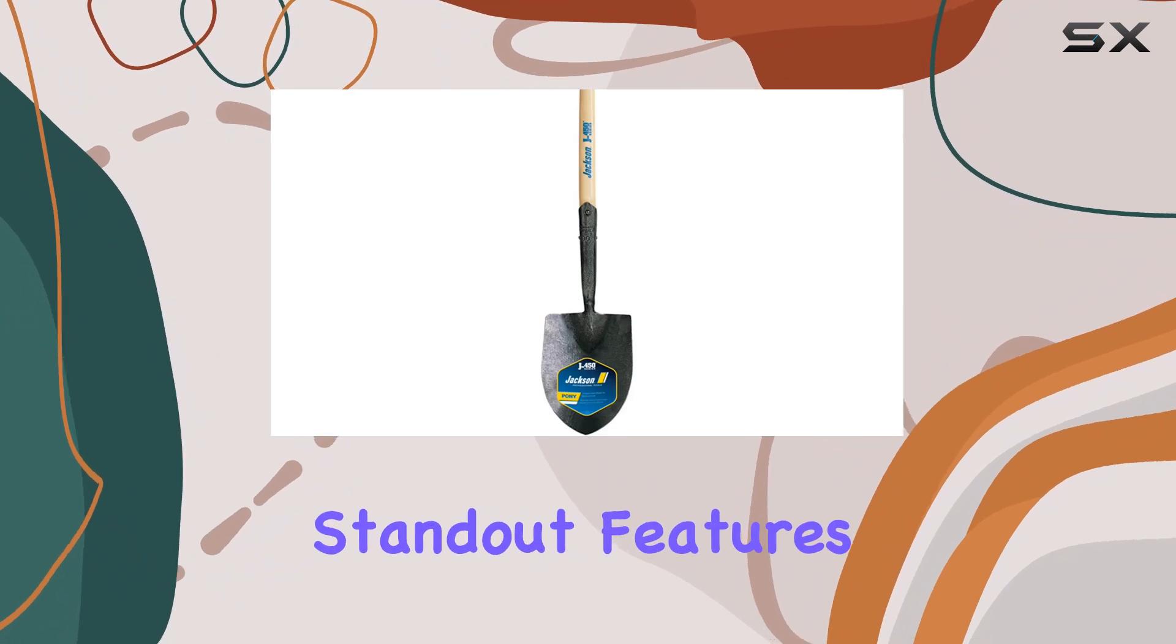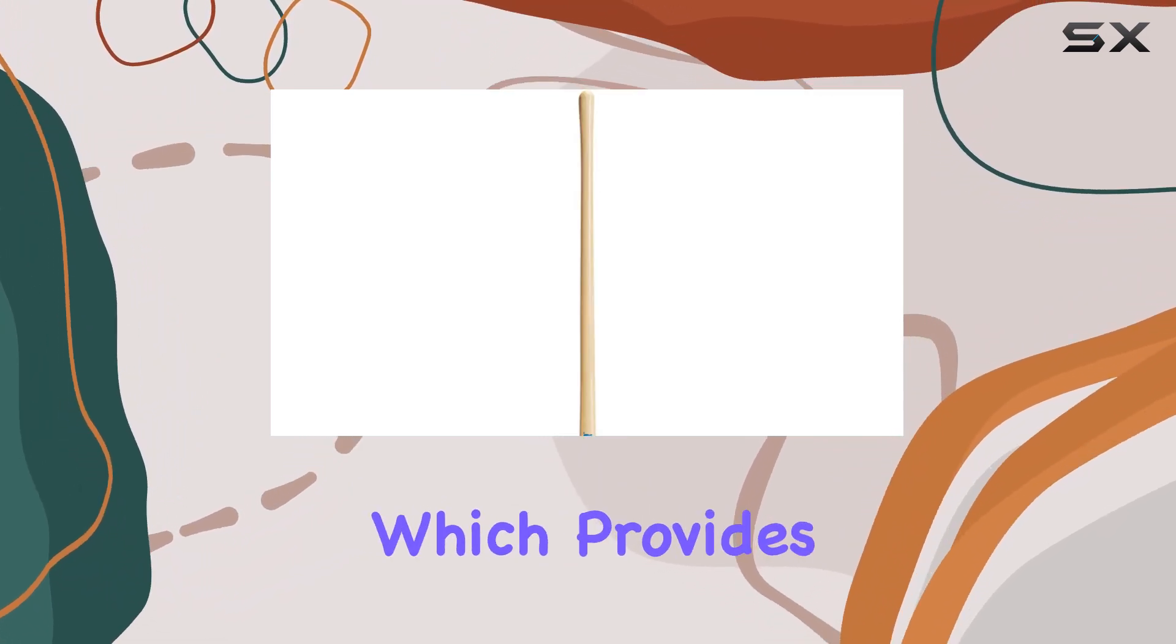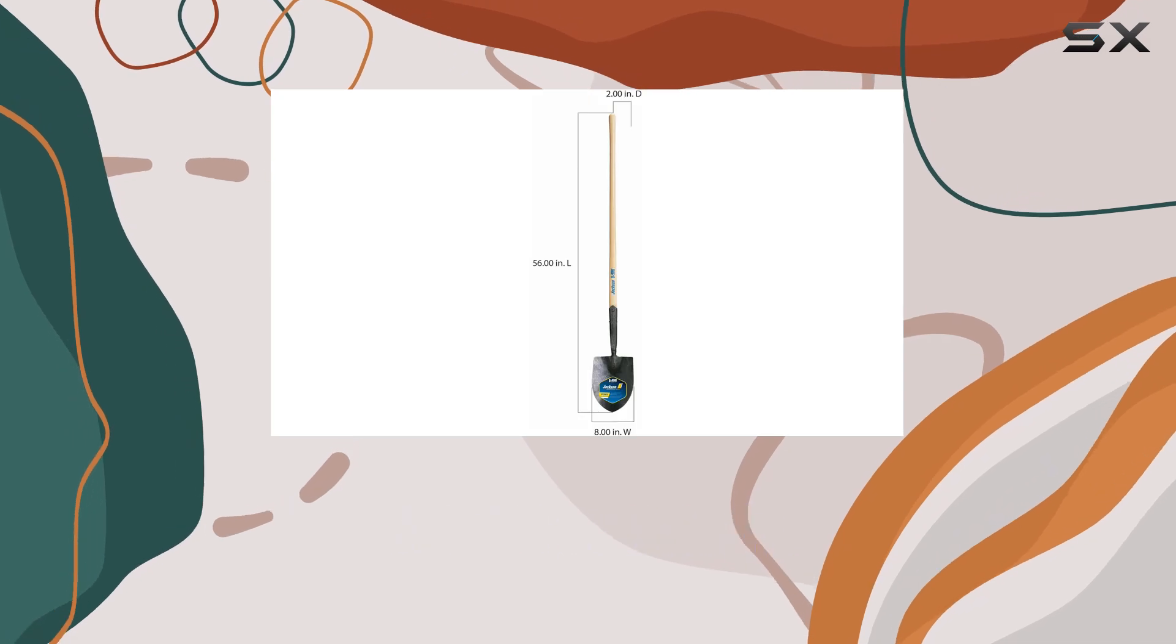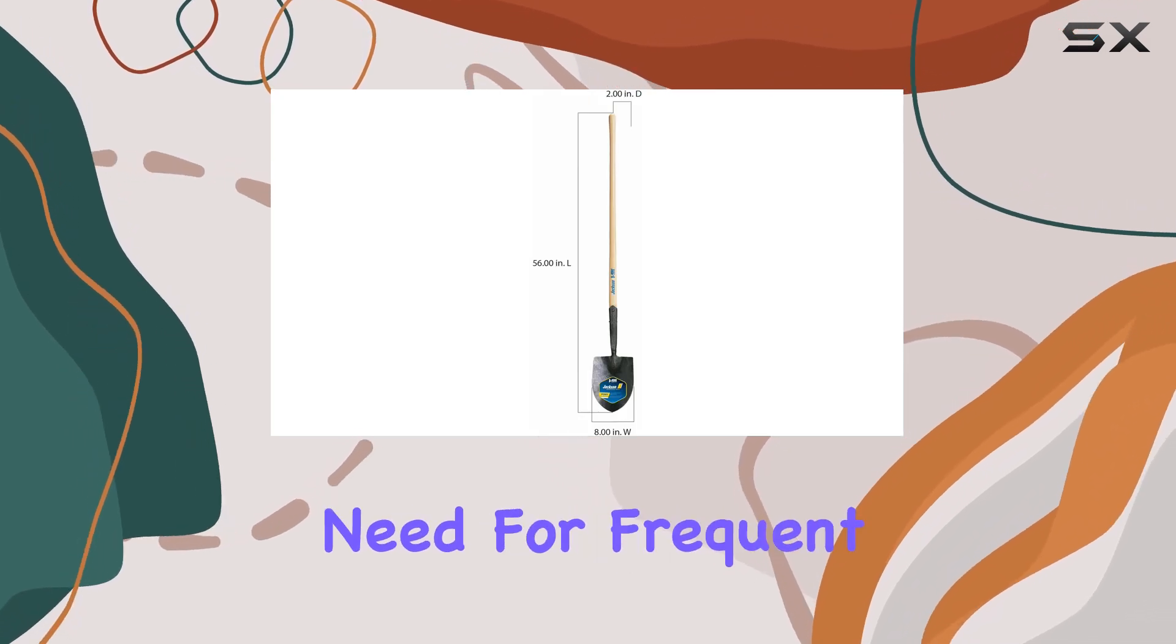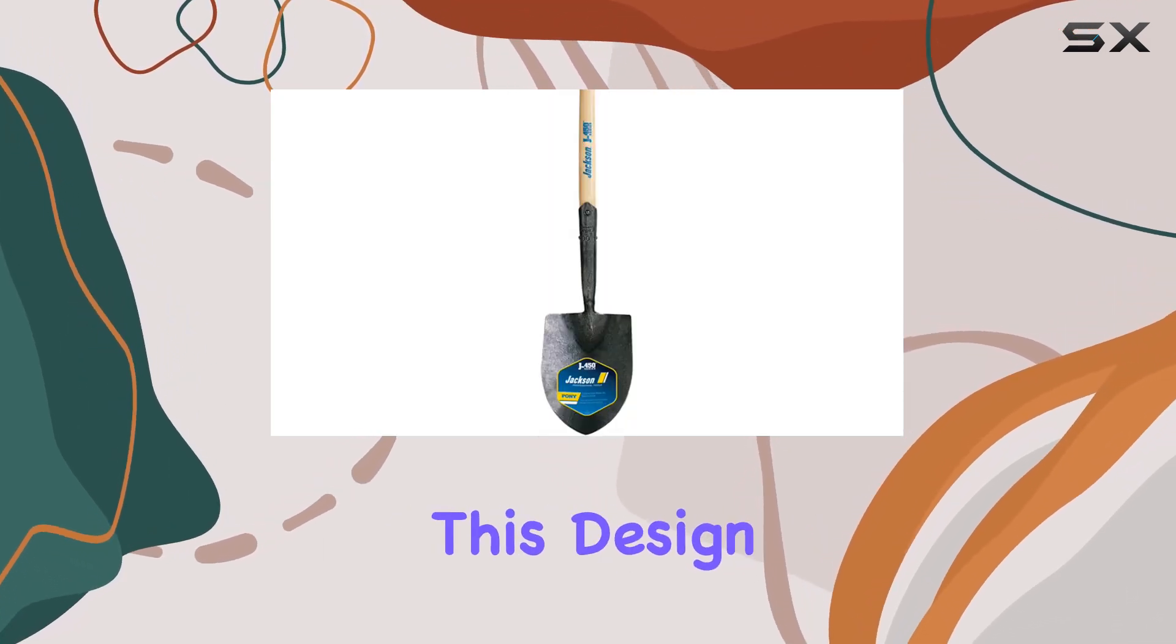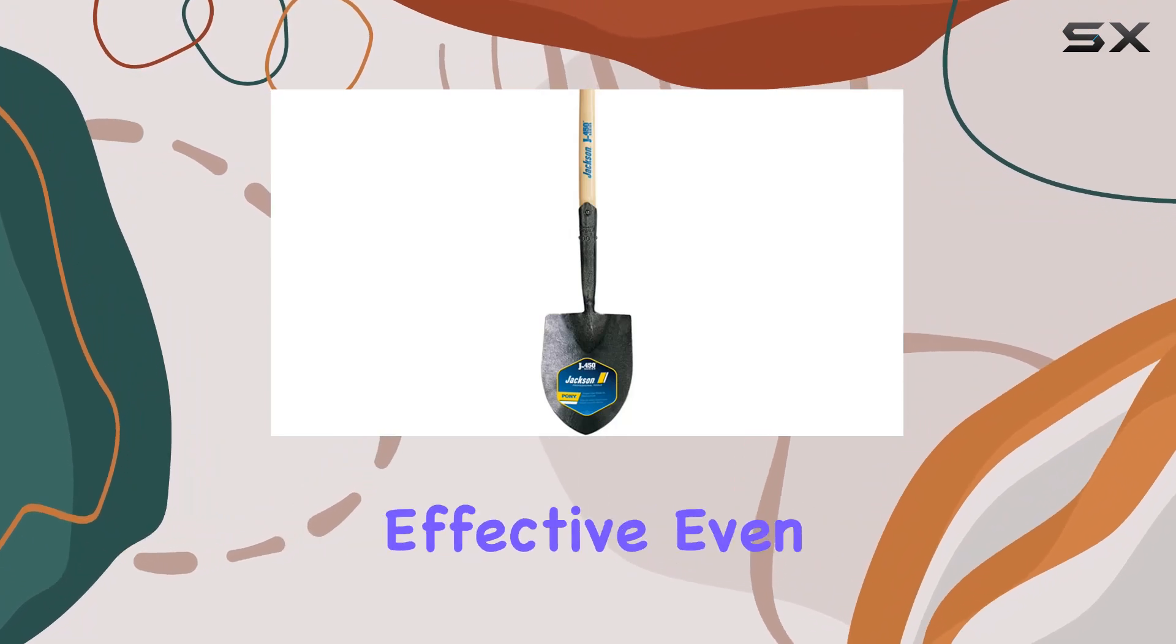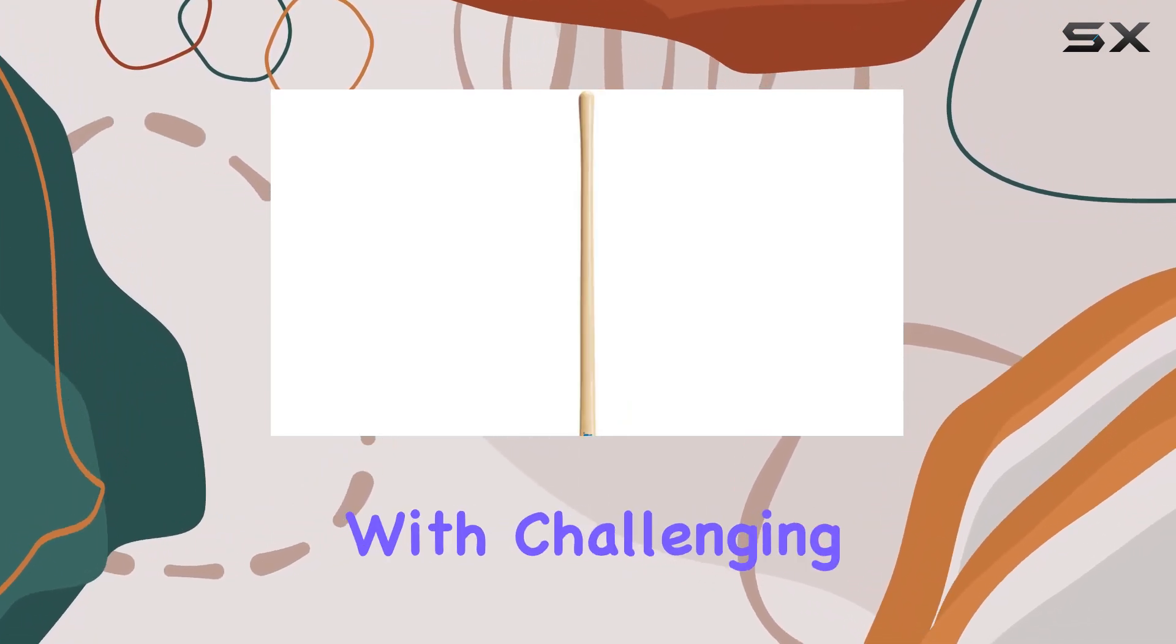One of the standout features of the shovel is its solid shank blade, which provides superior strength and prevents soil buildup, reducing the need for frequent maintenance. This design ensures that the shovel remains effective even when dealing with challenging soil conditions.